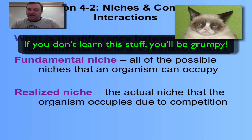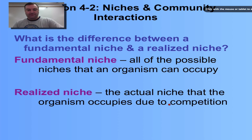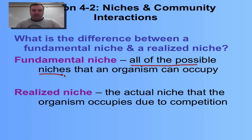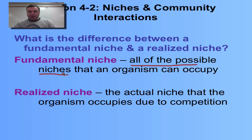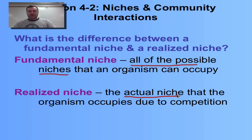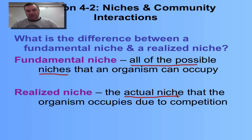Two concepts come into play with the competitive exclusion principle: fundamental niches and the realized niche. The fundamental niche is all of the possible niches that an organism can live in. Think of a tree — from the bottom all the way up to the top. If a bird, squirrel, or other animal has the ability to live anywhere in that tree, that's its fundamental niche. The realized niche is the actual niche it occupies. If two birds compete for the top of the tree, the competitive exclusion principle says only one species gets to occupy that niche; the other must move to the bottom of the tree or to a whole new forest.